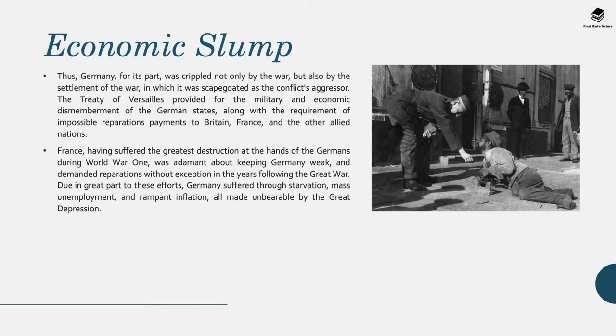Germany was crippled not only by the war itself — being on the losing side — but also by the settlement in which it was scapegoated as the conflict's aggressor. Article 231 of the Treaty of Versailles forced Germany to sign a war guilt clause accepting responsibility for starting the war, which wasn't actually true. The war had started between a Serbian nationalist and Austro-Hungary. The Treaty provided for the military and economic dismemberment of Germany, along with reparation payments to Britain, France and other allied nations.